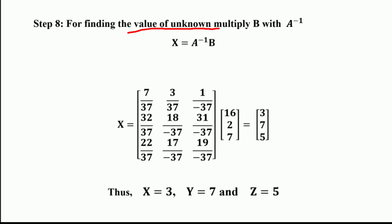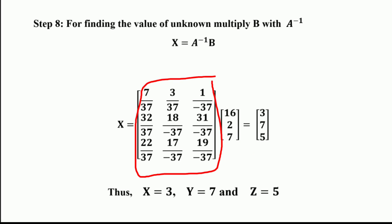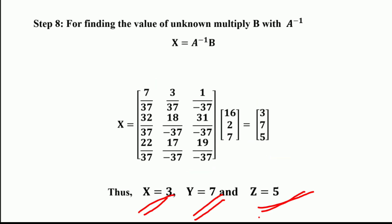The last step is to find the values of the unknowns x, y, and z. We multiply the inverse of A by the constant matrix B = [16; 2; 7]. Multiplying gives the values [3; 7; 5]. So x = 3, y = 7, and z = 5. This is the complete procedure for finding the unknowns of a system of linear equations using the inverse of a matrix.